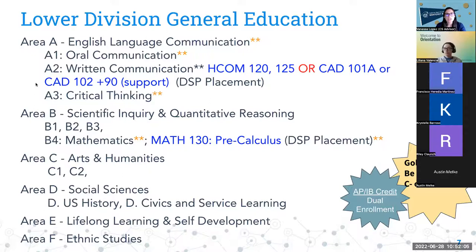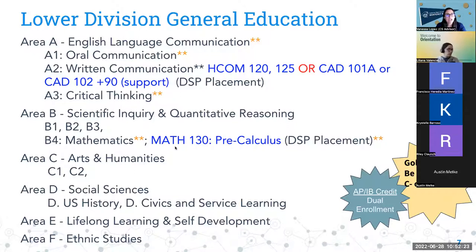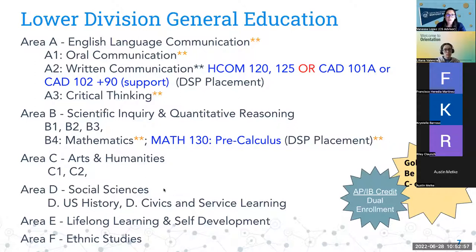Here are the general education requirements, areas A through F. The areas marked with an asterisk — oral communication, written communication, critical thinking, and math — must be passed with a C-minus or better. This is known as the Golden Four and applies across CSU and UC systems, covering areas A1 through A3 and the math area. All other areas, such as arts, social sciences, E and F, can be passed with a D to count as passing.